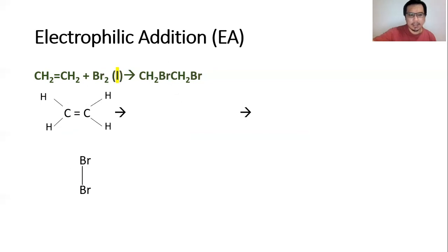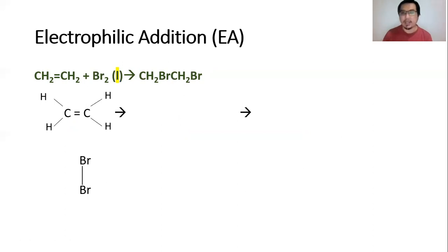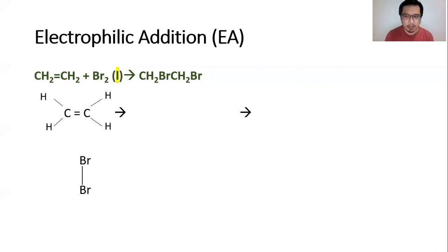Moving on to another example: the reaction of an alkene with a non-polar molecule — in this case, bromine liquid. The resulting product is 1,2-dibromoethane, which is a halogenoalkane. To start, draw out the molecule again with focus on the carbon-carbon double bond, with the trigonal planar geometry as shown, and write the bromine molecule at the bottom.